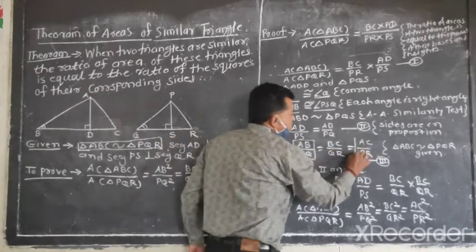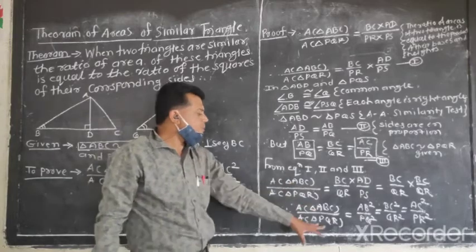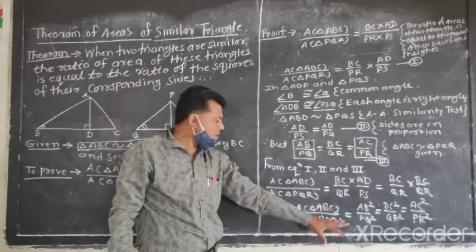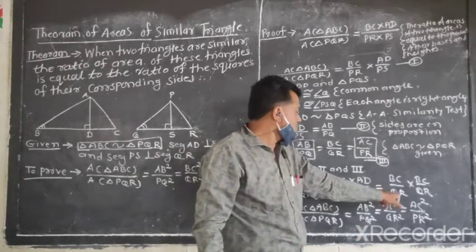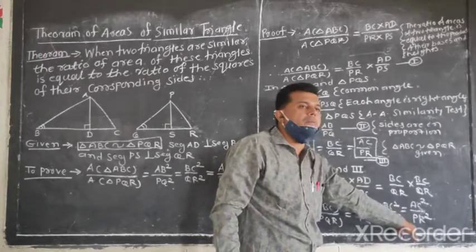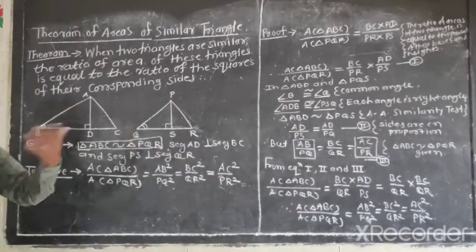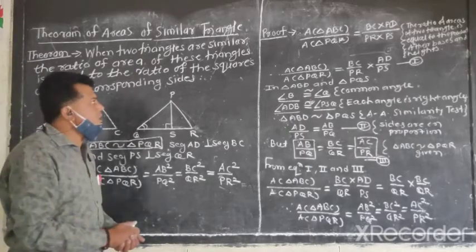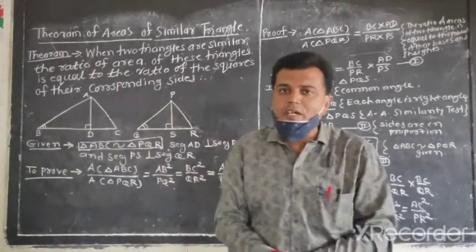Here you have BC divided by PR and from equation 1 to 3, area of triangle ABC divided by area of triangle PQR is equal to AB square divided by PQ square is equal to BC square divided by QR square is equal to AC square divided by PR square. Now I am going to assume that when two triangles are similar, the ratio of the areas of these two triangles is equal to the ratio of the square of the corresponding sides.